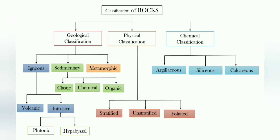Geologically, rocks are mainly three types: igneous, sedimentary and metamorphic. Igneous rocks are two types: volcanic and intrusive. Intrusive igneous rocks are further divided into two types: plutonic and hypabyssal. Sedimentary rocks are three types: clastic sedimentary rocks, chemical sedimentary rocks and organic sedimentary rocks.